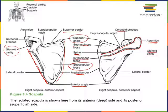Here we see the coracoid process. Coracoid means shaped like a beak of a bird, like a crow's beak. The coracoid process projects anteriorly from the lateral angle and serves as the origin for the biceps brachii, which has two heads — a short and a long head — and the short head has its origin at the coracoid process.